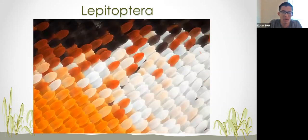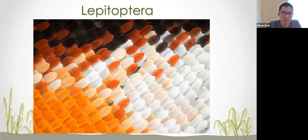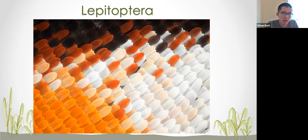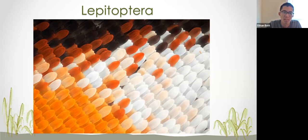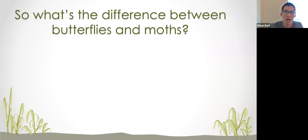Monarch butterflies fall into the order Lepidoptera, meaning 'scaly wings.' In this macro photo of a monarch butterfly, you can see that the scales may create tiny dead air pockets which help provide more lift, allowing them to migrate thousands of miles. There's also a debate about whether scales help them escape spider webs, since they can lose scales and still survive.